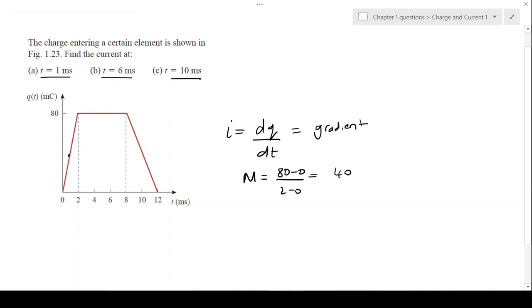So what will the current be at that point? The current is the rate of change, and remember that 80 is millicoulombs and 2 is milliseconds. This gives you a current value of 40 amps.